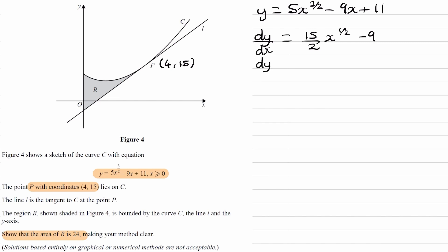So we then put in 4 into our differential, and we end up with 15 over 2 times 2 minus 9, which is the same thing as 6. So our gradient is 6.